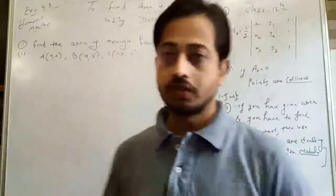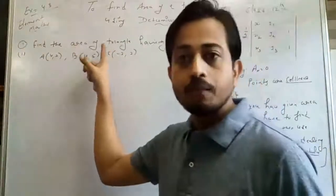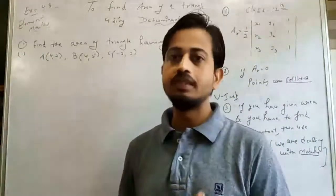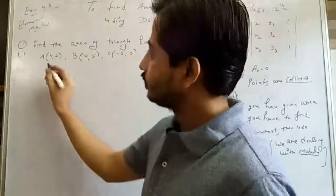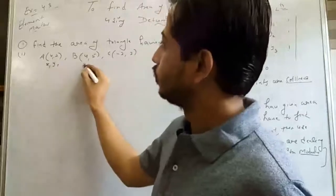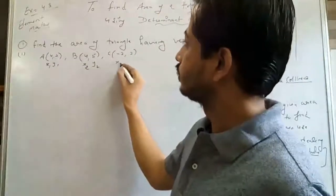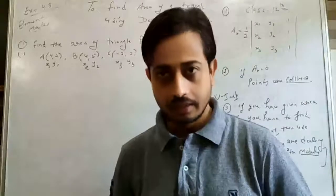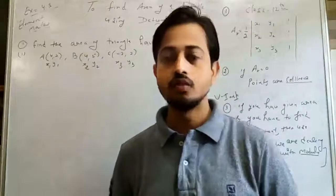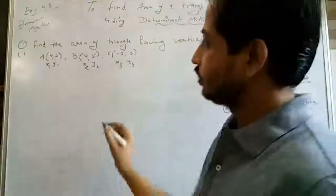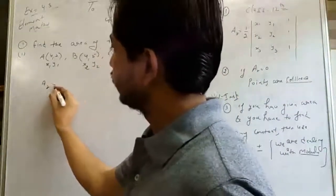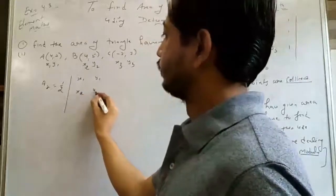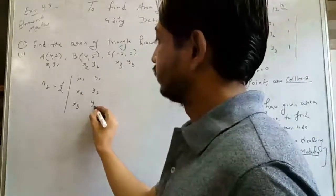Now let's take the first question. Find the area of the triangle having vertices A, B, C. The triangle has three vertices A, B, C with coordinates: X1, Y1 = (4, 2); X2, Y2 = (4, 5); X3, Y3 = (-2, 2). We have to calculate the area of the triangle using the Determinant method. Firstly write the formula: Area of triangle = (1/2) × determinant with columns [X1, X2, X3], [Y1, Y2, Y3], [1, 1, 1]. Now substitute: first row is (4, 2, 1), second row is (4, 5, 1), third row is (-2, 2, 1).